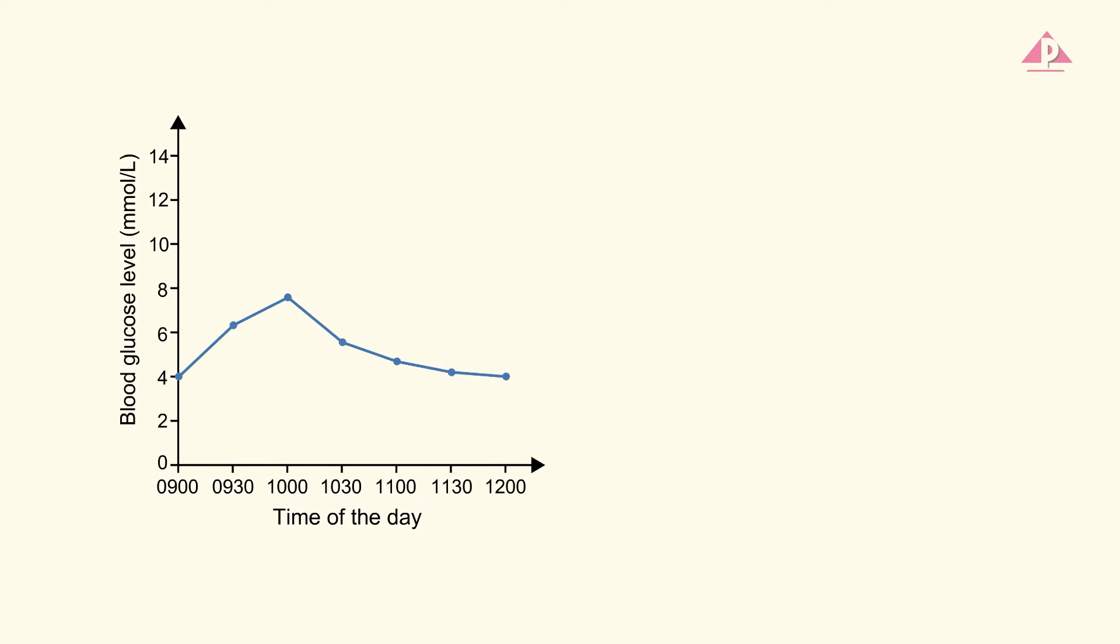We may divide this graph into two phases and mention three points. First, from 9 o'clock to 10 o'clock, Alan's blood glucose level increased.